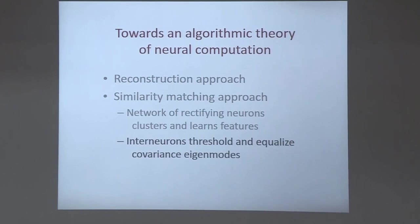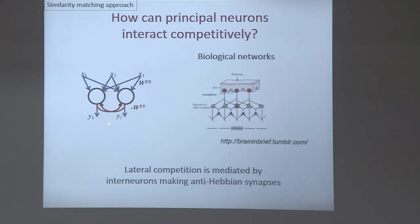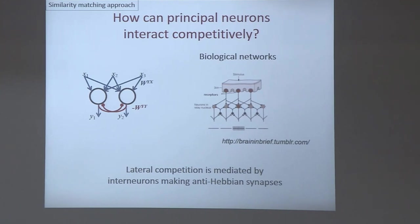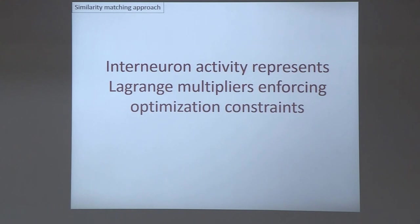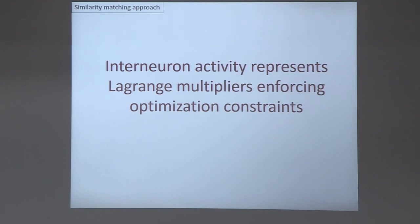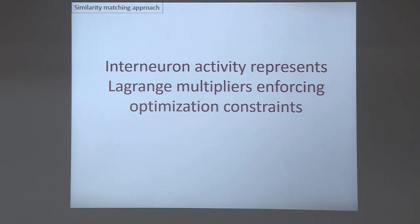I'll skip over the last part: if biologists are offended by the direct inhibitory connections between principal excitatory neurons, we can solve that too. There is a slightly more complicated network where inhibitory interneurons naturally arise and represent Lagrange multipliers in our objective function, enforcing optimization constraints. This makes me very happy, because now I can understand why you have excitatory and inhibitory neurons doing different jobs — the Lagrange formulation describes that.